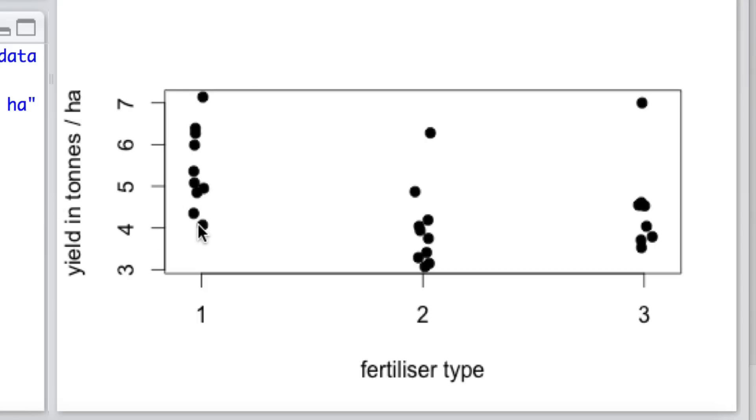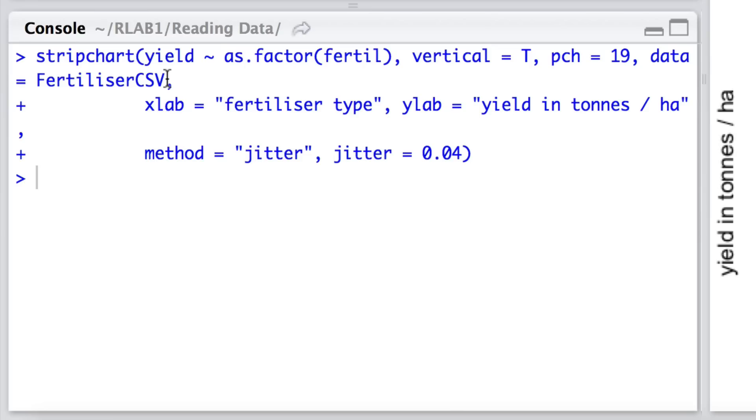So here what we have is the data all laid out with fertilizer type 1, 2, or 3, and there we have the yield in tonnes. And it's all done with this simple command strip chart. So it appears that the yield is slightly higher on average in fertilizer 1, but can we be confident of this?